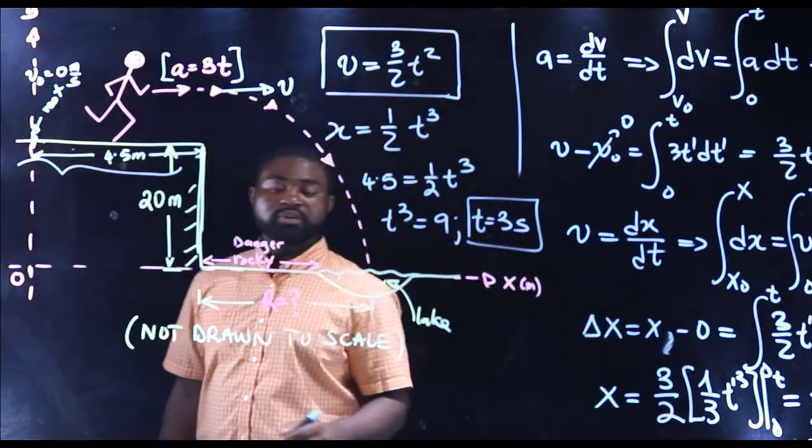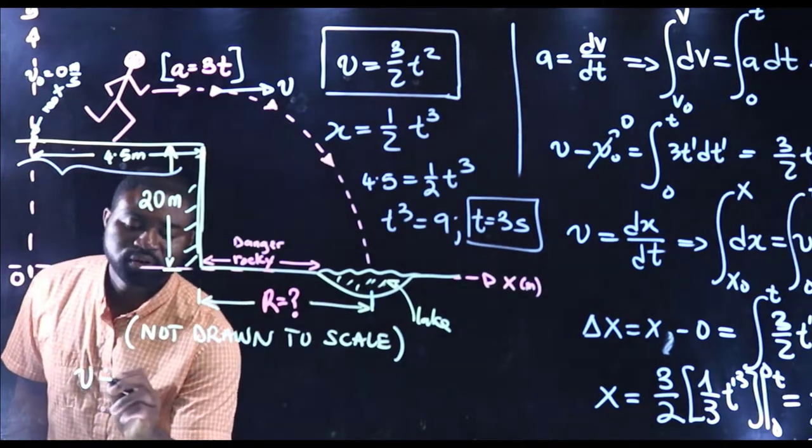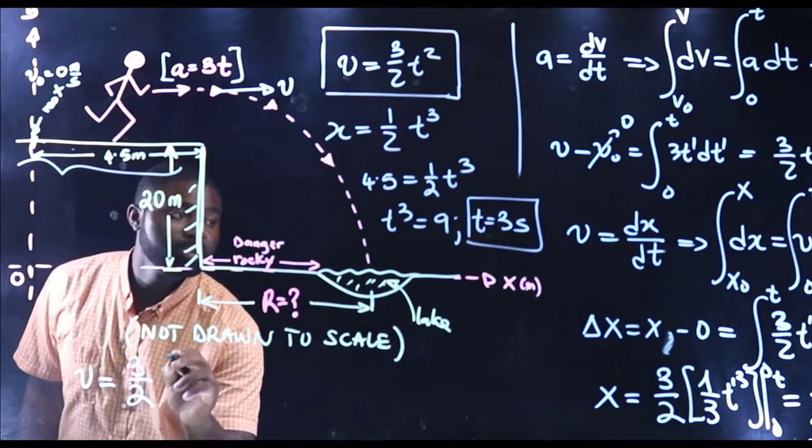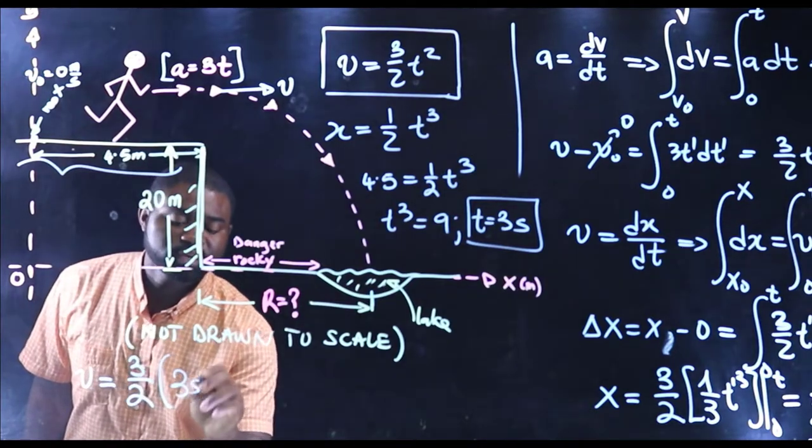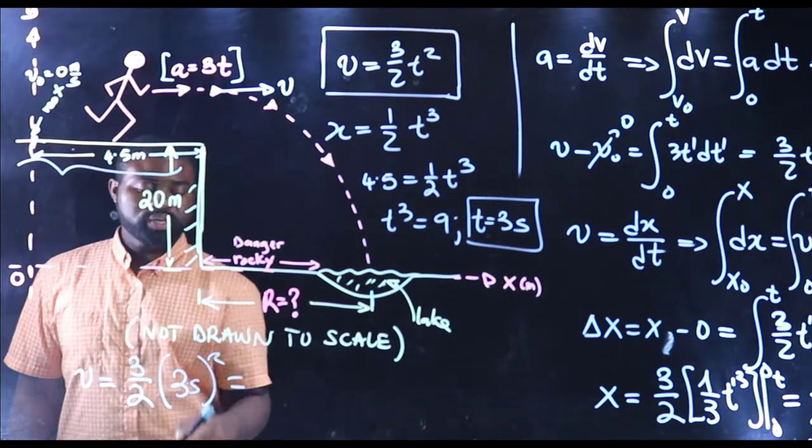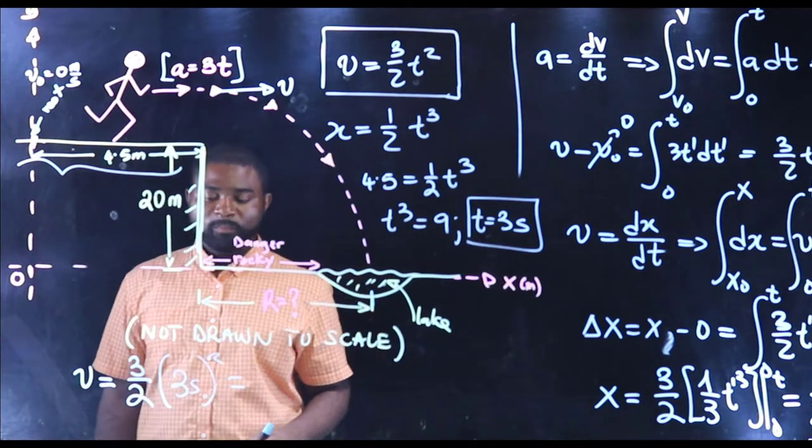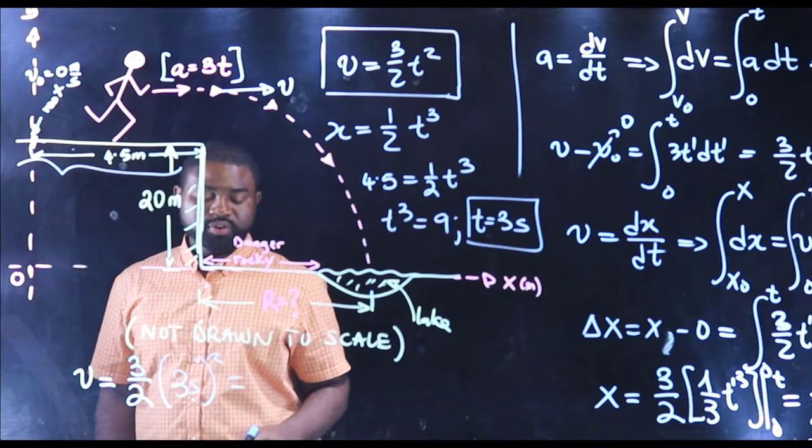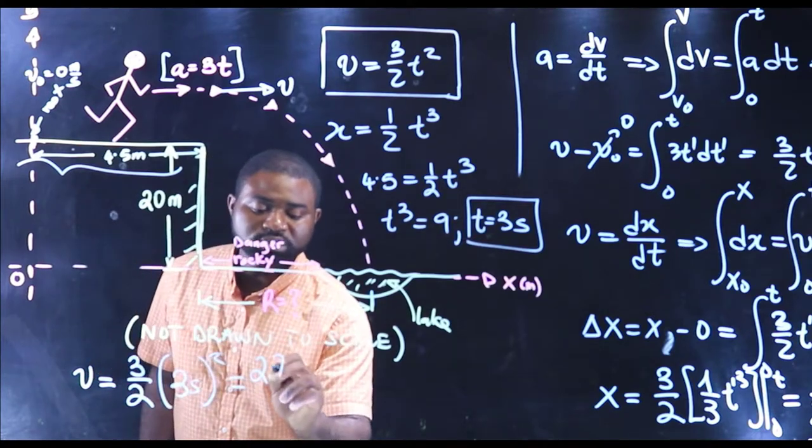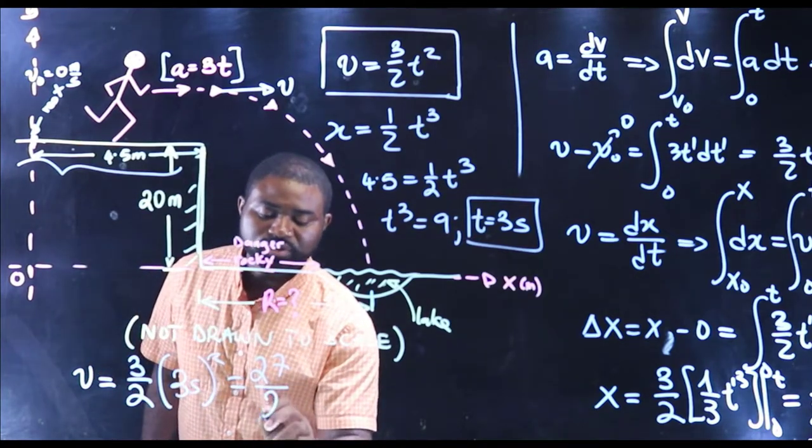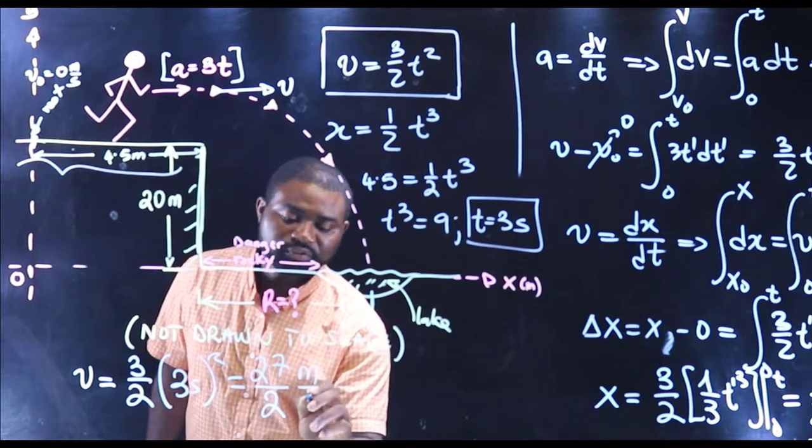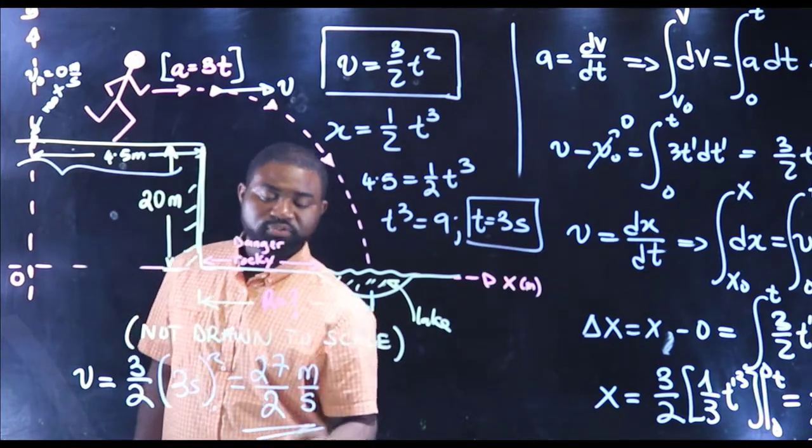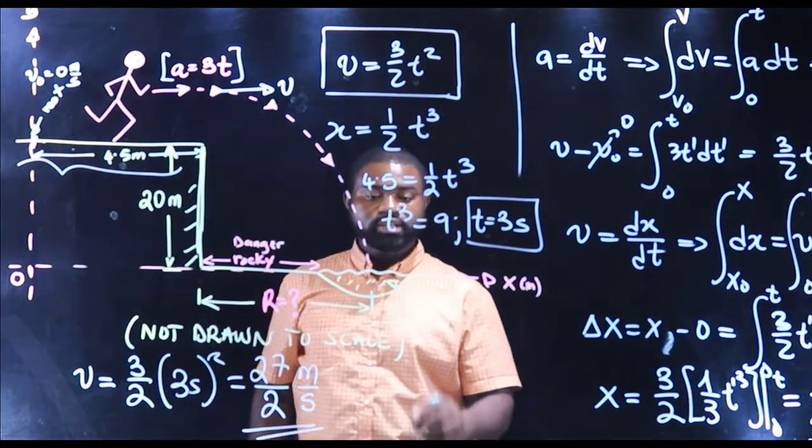So that means that v is equal to 3 over 2, three seconds all squared. Three squared is nine. Nine times three is 27. So this is going to be 27 over 2 meters per second. So this right here represents the initial velocity in the x direction.